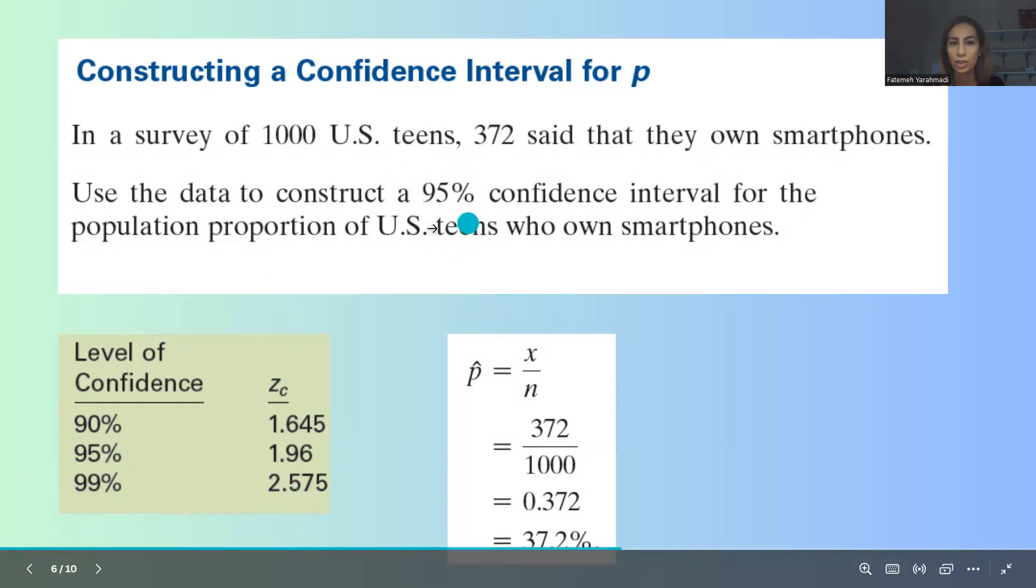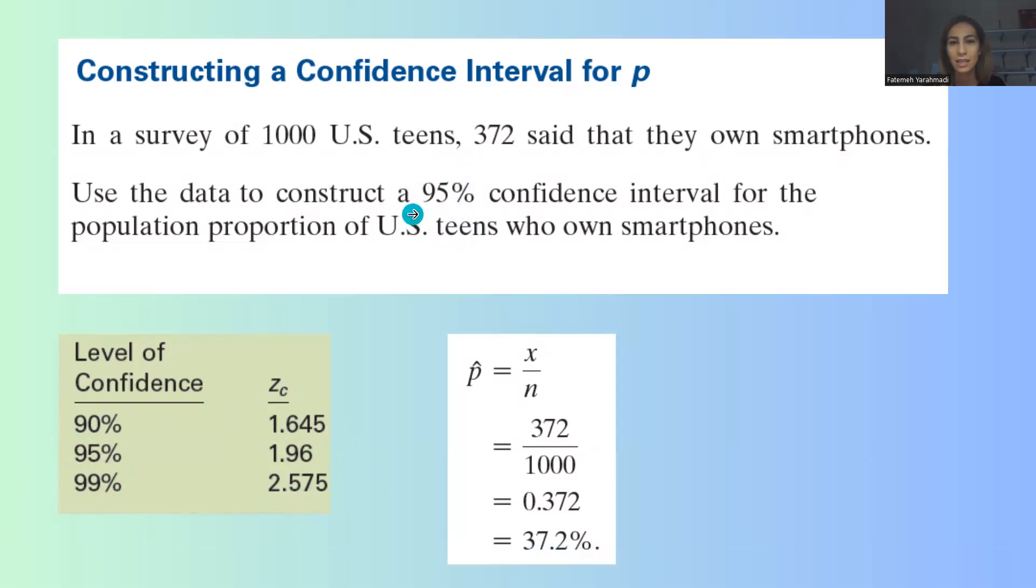Take a look at this question. The question says I want you to use a 95% confidence level. It means that the critical value that you're going to use to find a margin of error is 1.96. So now that we have all of the information that we need, we can go to the next page and take a look at the steps.